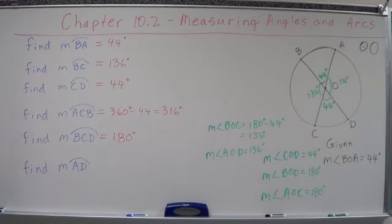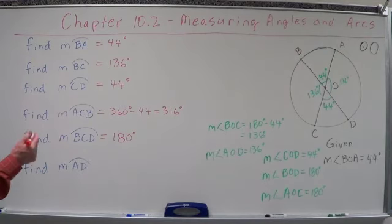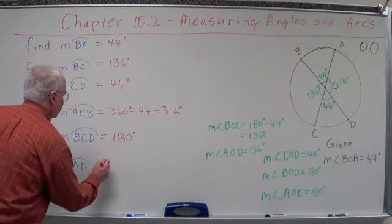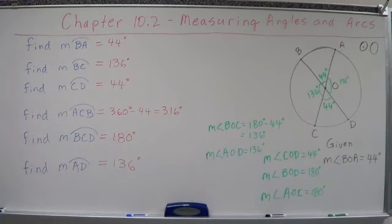Now let's go over here to AD, arc AD. Starts at A and goes to D. Starts at A and goes to D. I've already said that central angle, AOD is 136. So this is going to be 136. Let's working with arcs.